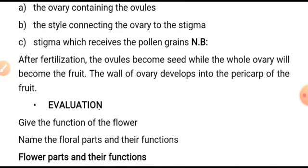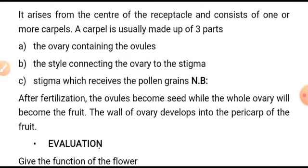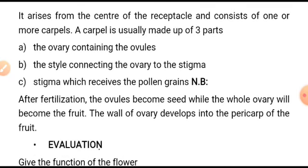Note: after fertilization, the ovules become seeds, while the whole ovary will become the fruit. The wall of the ovary develops into the pericarp of the fruit. The gynoecium has three parts: the ovary, style, and stigma. The style connects the ovary to the stigma and is the tube through which pollen grains pass from the stigma to the ovary.